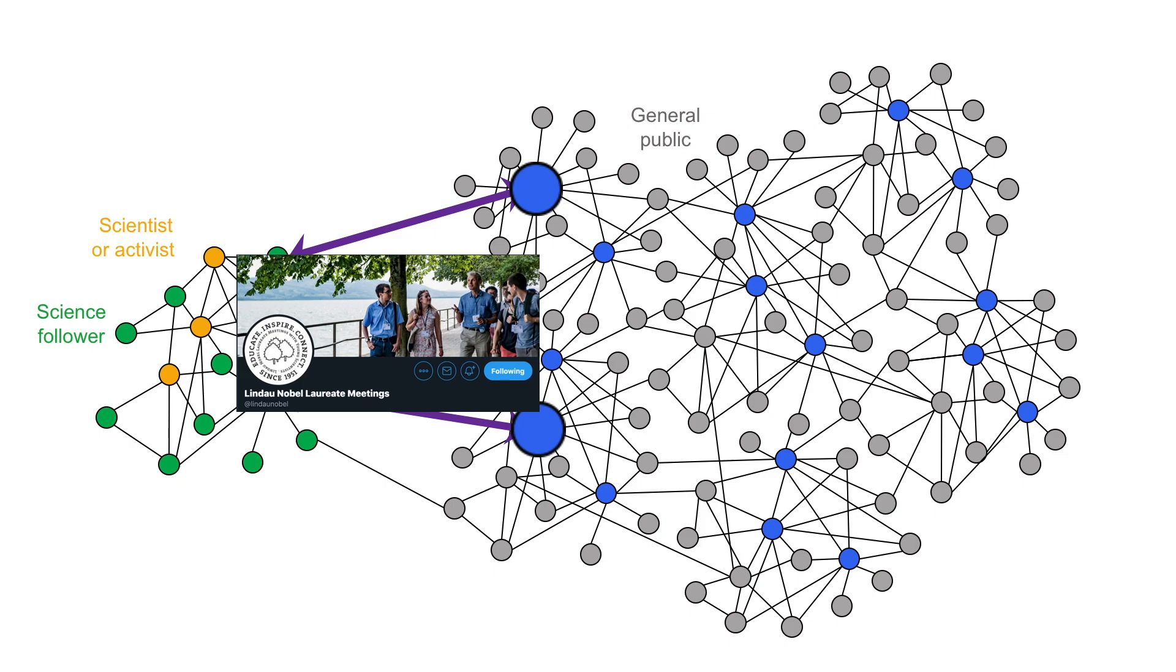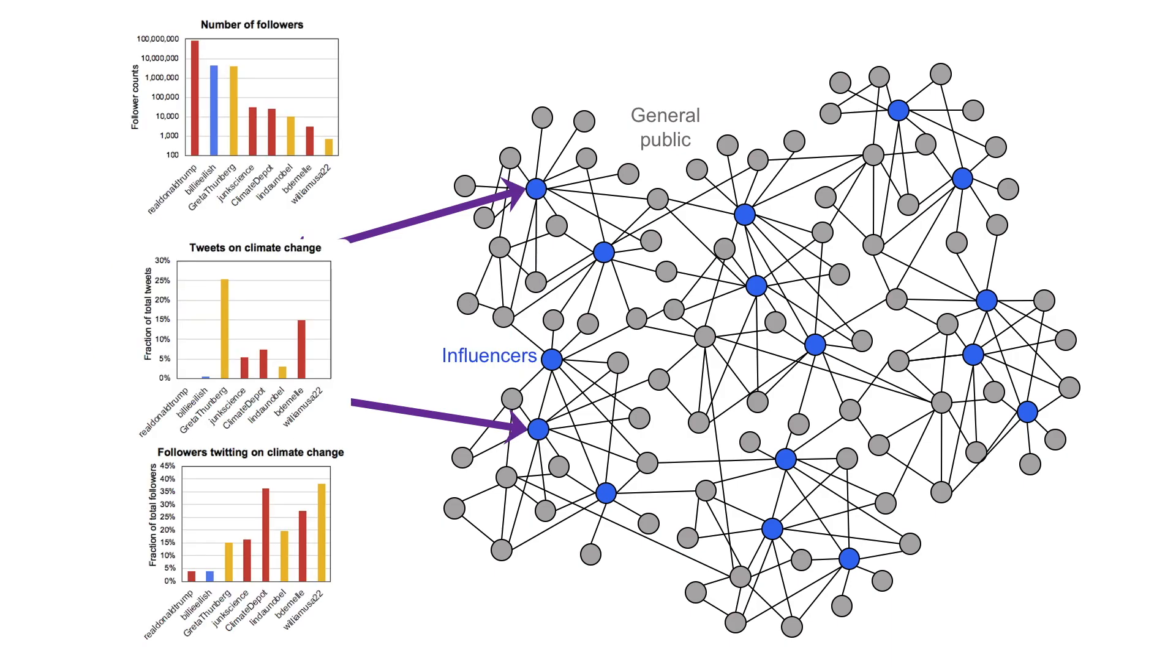And although it's not straightforward who to target, social network analysis can help. Using public information on Twitter accounts, we can find those influencers that have the highest potential.